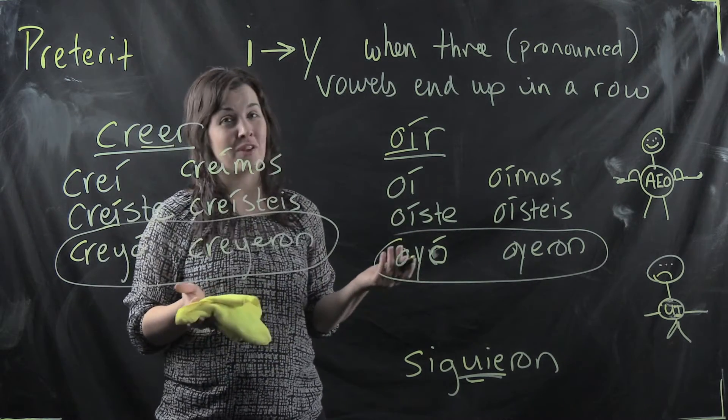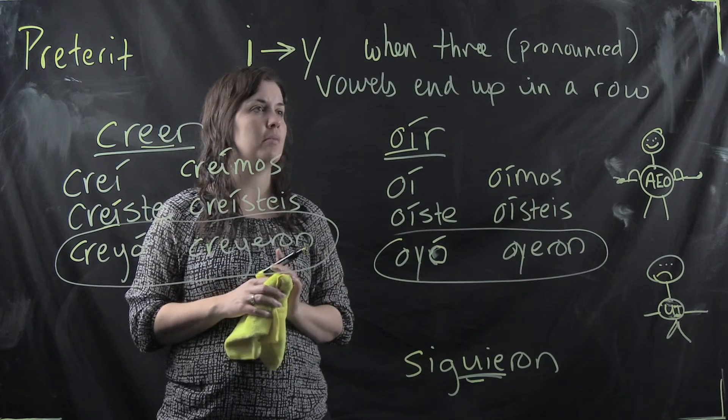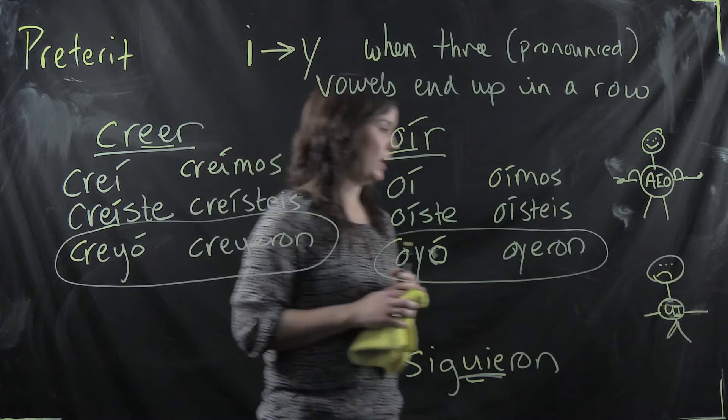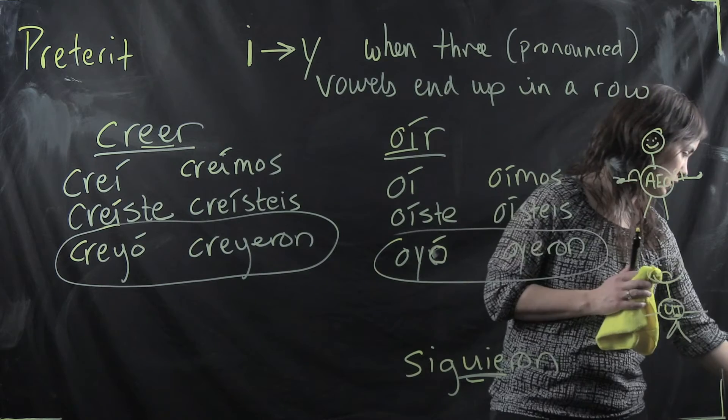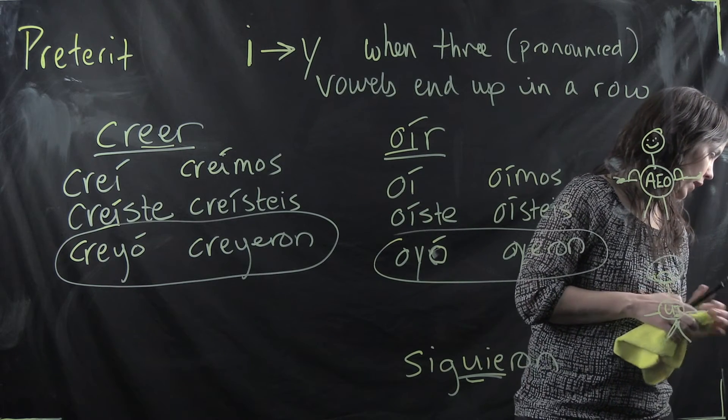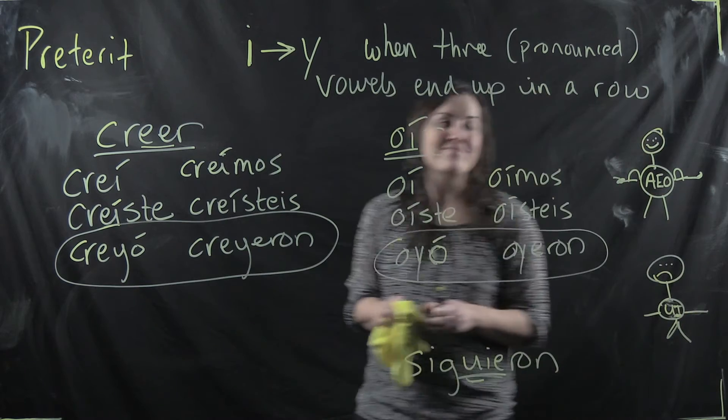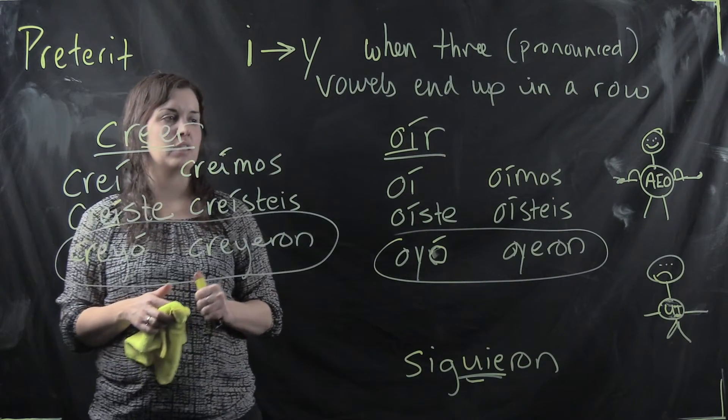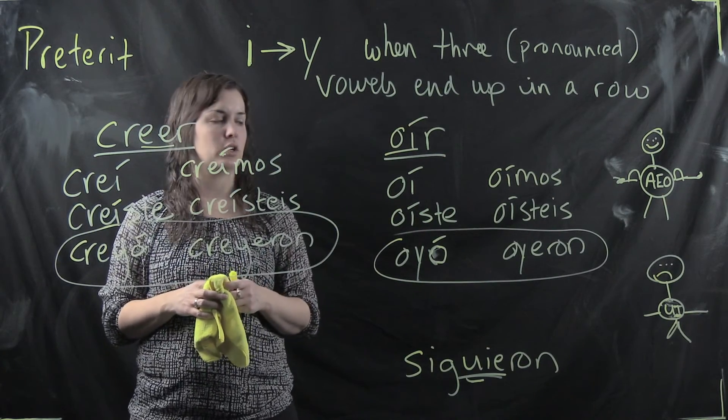You need to remember that they do obviously when you're spelling. But that's how those work. Again, this is from page 206 in your text or e-text. The book calls it verbs that change from I to Y in the third person singular and plural. The book doesn't tell you a lot about the why behind it. So this is that explanation. So there you go.